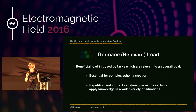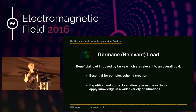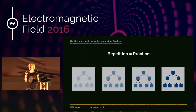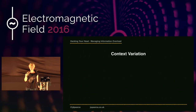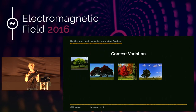Germane or relevant load is a beneficial load imposed by tasks that are relevant to an overall goal. It helps us connect bits of information and form more complex schemas. Repetition and context variation give us the skills to apply knowledge in a wider variety of situations. Schemas need reinforcing through repeated recall and usage, making them easier for working memory to retrieve. You can vary the context by seeking out multiple sources of information — there is no such thing as the definitive tree.